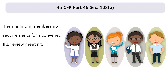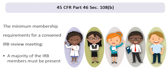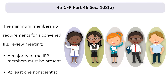To establish quorum at a convened meeting, a majority of the IRB members must be present, including at least one member whose primary concerns are in non-scientific areas. In addition, if the IRB will be reviewing research involving prisoners, there are additional requirements that will be addressed later in this tutorial.